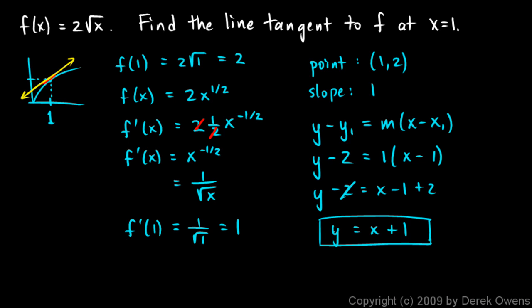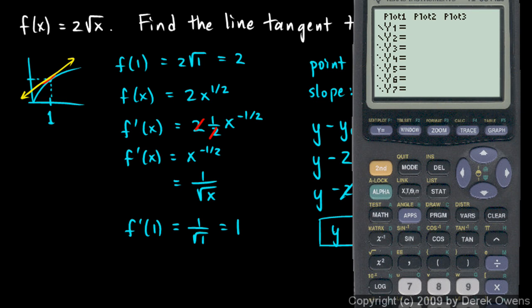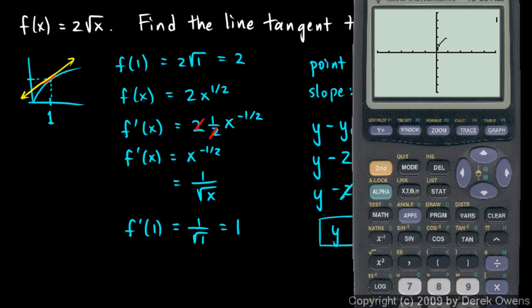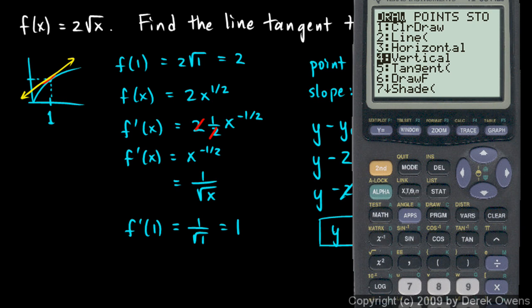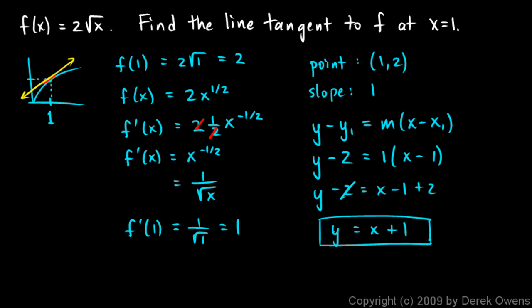For the second example, 2 square root of x with expected tangent y equals x plus 1, we clear y1, type in 2 square root of x, and graph it. Then second draw, option 5 (tangent), entering x equals 1. The calculator draws the tangent line, giving an equation very close to y equals x plus 1. The slight inexactness is due to the numerical approximation the calculator uses, rather than the exact calculus we performed.